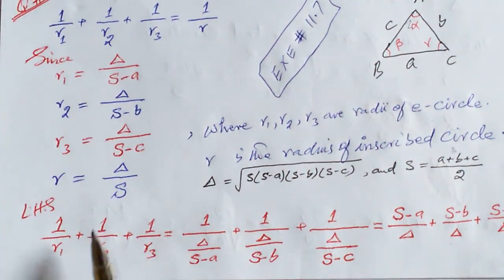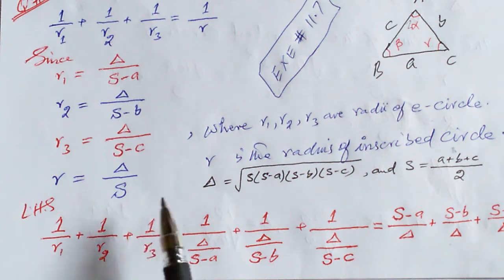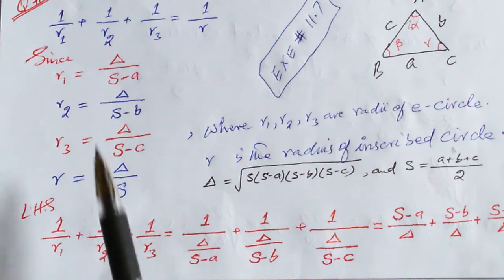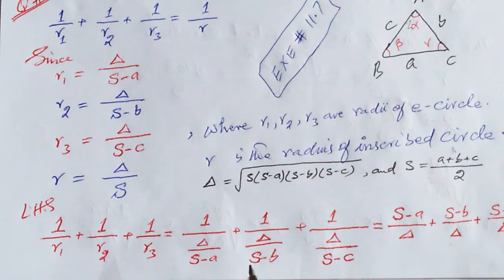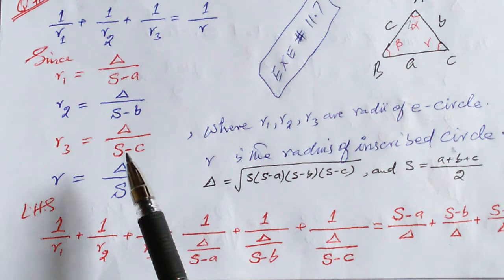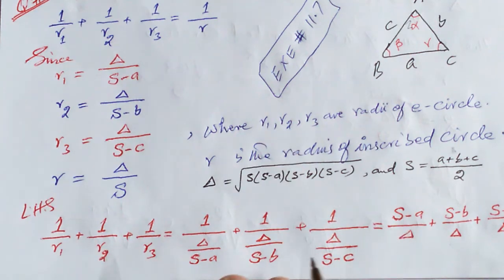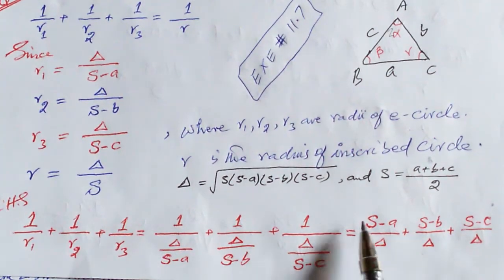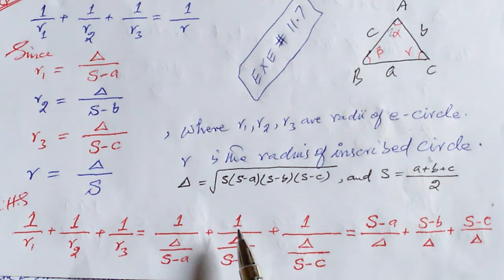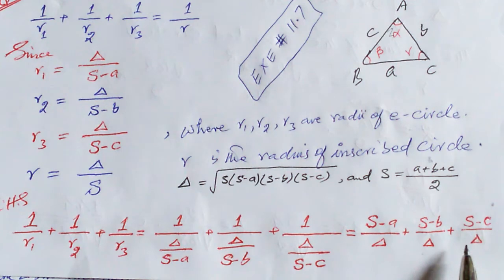Substituting into the left-hand side: 1/r1 + 1/r2 + 1/r3. Replacing r1, r2, r3 with their formulas gives (s−a)/Δ + (s−b)/Δ + (s−c)/Δ. This is a simple arithmetic operation.